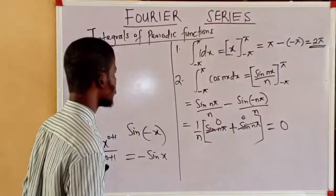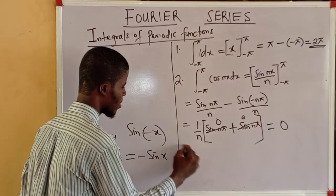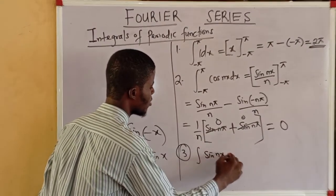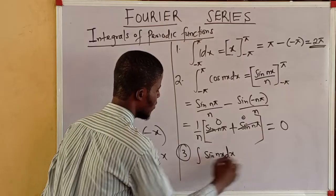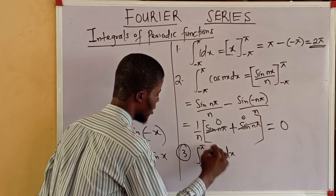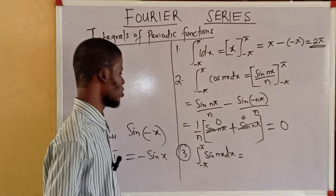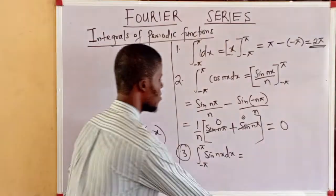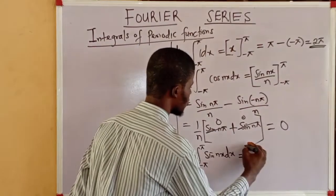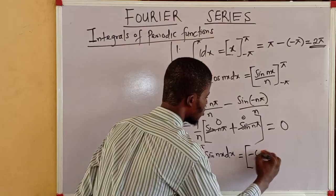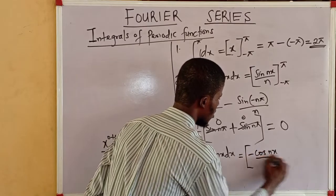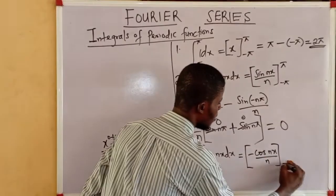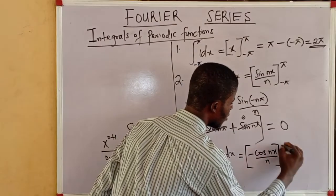The next integral we are considering is the integral of sine(nx) dx from negative pi to pi. The integral of sine(nx) dx is −cos(nx)/n, from negative pi to pi.